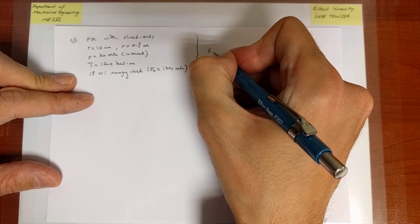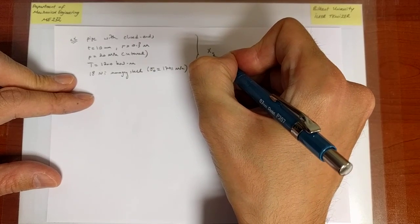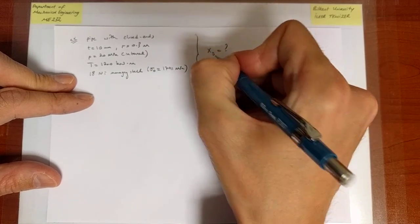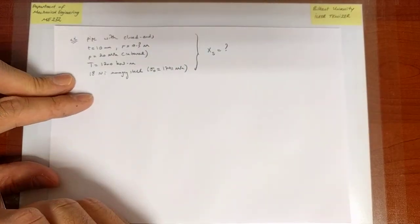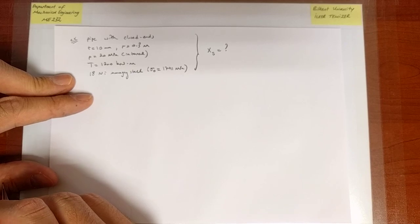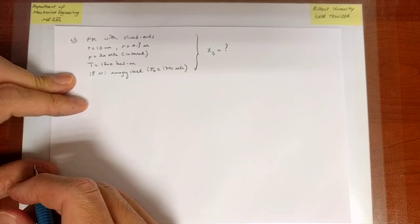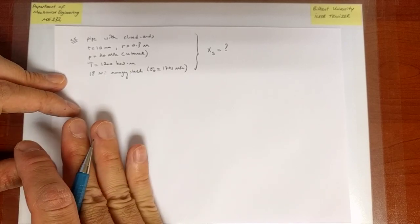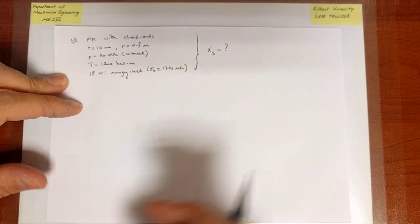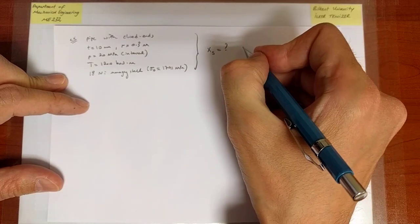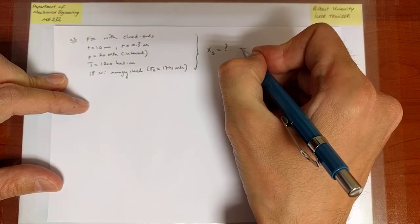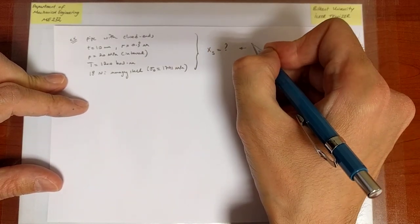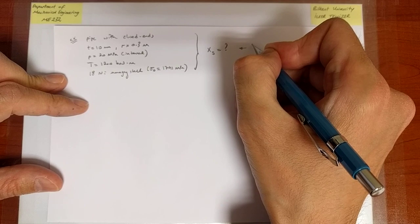We are going to use the Tresca criterion. The first thing to remember is that the safety factor is given in terms of the ratio of the shear strength to the observed maximum shear stress.